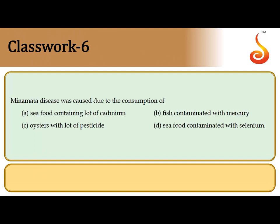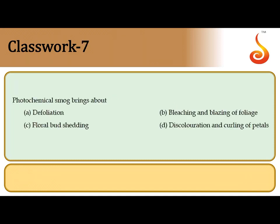The sixth question: Minamata disease is named after Minamata Bay in Japan. This disease occurred because a heavy metal entered the food chain and affected human beings. It was caused by consumption of fish contaminated with mercury. The correct answer is option B: fish contaminated with mercury.